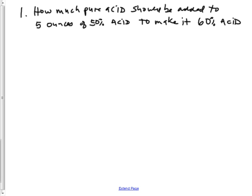Number one, how much pure acid should be added to five ounces of 50% acid? Alright, well hopefully you knew this formula. A₁%₁ + A₂%₂ = (A₁ + A₂) × total%. Amount 1 times percent 1 plus amount 2 times percent 2 equals amount 1 plus amount 2, and then you times that by the total percent.